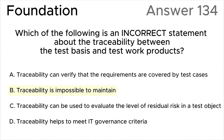The correct answer is B. Traceability is impossible to maintain — according to the ISTQB syllabus, this statement is incorrect. In fact, traceability is a crucial aspect of the testing process. It helps establish links between different phases of the software development life cycle, ensuring that changes are managed effectively.